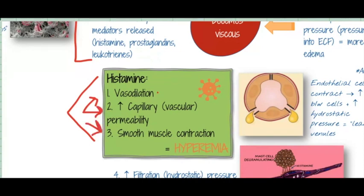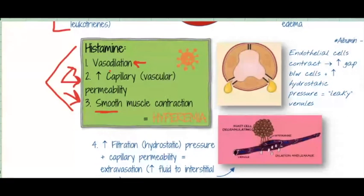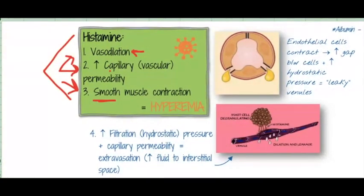Histamine does these three big things. First, it causes vasodilation — no problems there. Second, it causes an increase in capillary permeability: the vascular system at that site of injury becomes more susceptible to things passing through its outer membrane. Third, there's smooth muscle contraction, but it doesn't really come up in your notes, so we'll skip it and focus on vasodilation and increased capillary or vascular permeability.